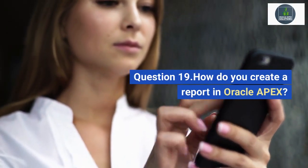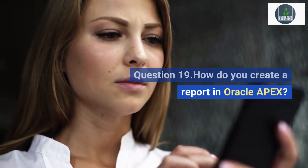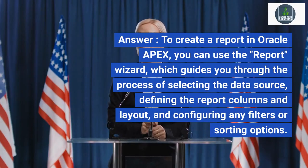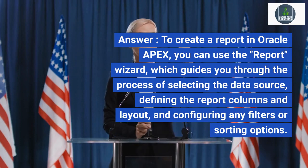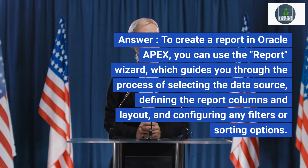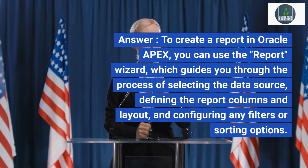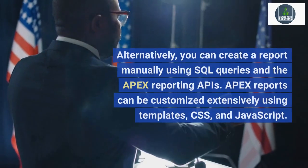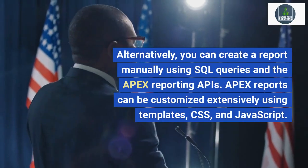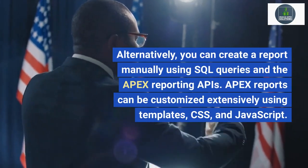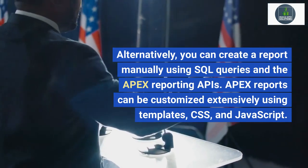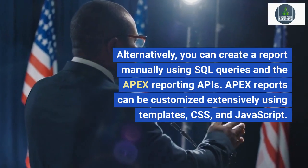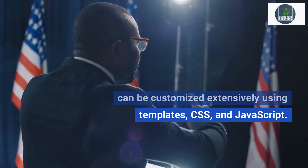Question 19. How do you create a report in Oracle Apex? Answer. To create a report in Oracle Apex, you can use the Report Wizard, which guides you through the process of selecting the data source, defining the report columns and layout, and configuring any filters or sorting options. Alternatively, you can create a report manually using SQL queries and the Apex reporting APIs. Apex reports can be customized extensively using templates, CSS, and JavaScript.